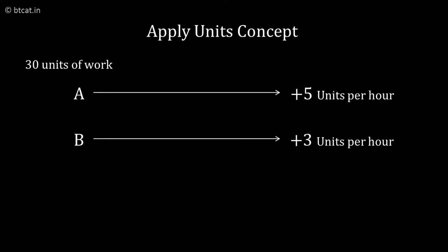Apply the concept of units. Take the total units as the LCM of 6, 10, and 15, which is 30 units. If 30 is the total unit, pipe A can fill 5 units per hour, this is plus 5. Pipe B can fill plus 3 units per hour, while pipe C can remove minus 2 units per hour.